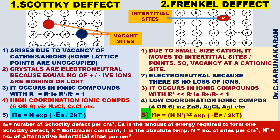The number of Frenkel defects (N) per cm³ of the crystal is calculated using a formula where N is the number of lattice sites per cm³, N′ is the number of alternative interstitial sites per cm³, and Hf is the amount of energy required to form one Frenkel defect.